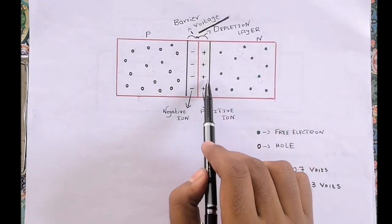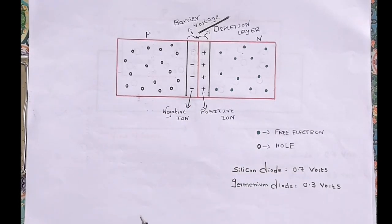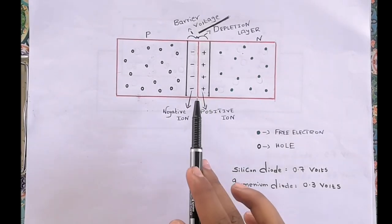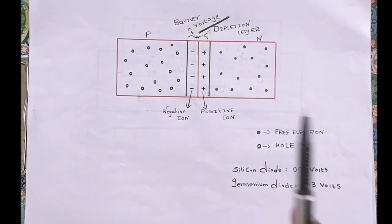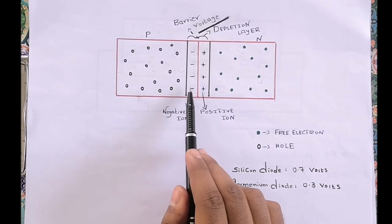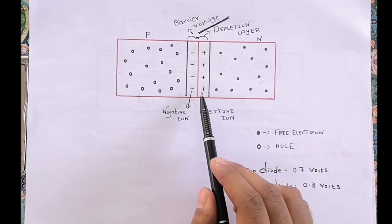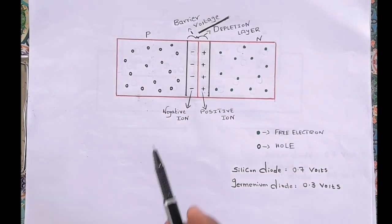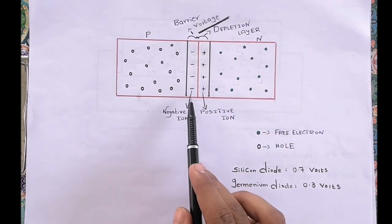The number of positively and negatively charged ions depends on the number of recombinations. If the number of recombinations between electrons and holes is more, more atoms get converted into positive and negative ions. At a particular point, these net charges act as barriers. The net negative charges at the p-side are called negative barrier voltage, and the positive charges at the n-side are called positive barrier voltage. The total charge is called barrier voltage or barrier potential.